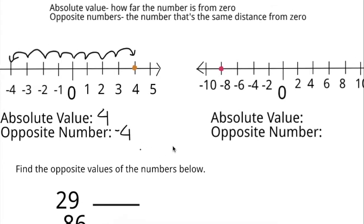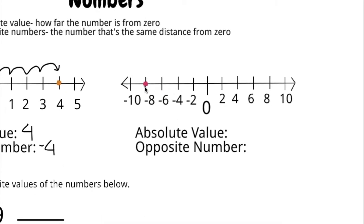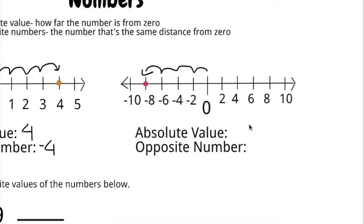Now let's try this again. The number we've been given is negative eight. And to find the absolute value, we find how many numbers we've skipped from zero to get to negative eight. So you've skipped two, four, six, eight numbers. So your absolute value is eight.